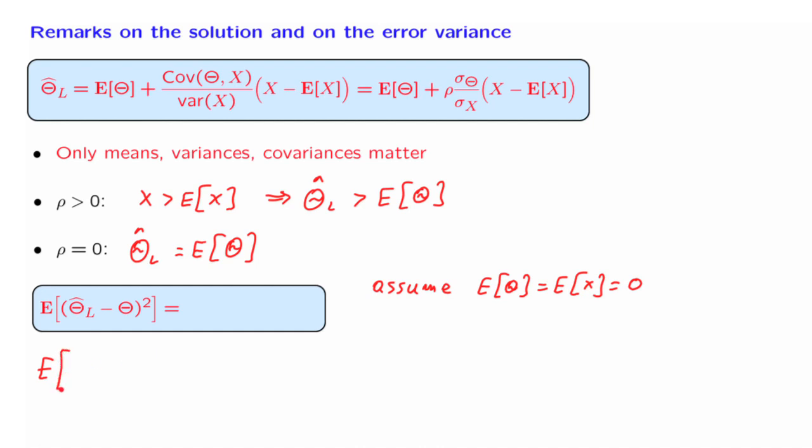So in this case, what we have, let me first write theta and then put here the estimator. The estimator is rho times sigma theta over sigma x times x. Basically, I took this formula, but I put zeros for the expected values. Now let us expand this quadratic. We obtain the expected value of theta squared. That's the variance of theta, since we assumed 0 means. And the variance is the square of the standard deviation.